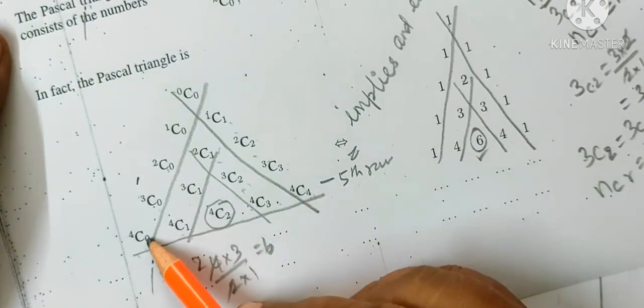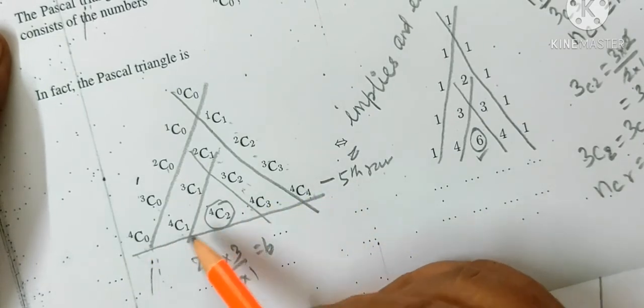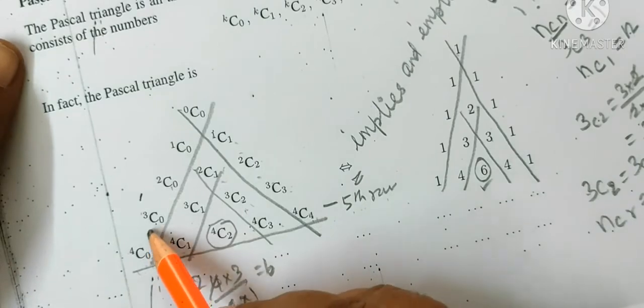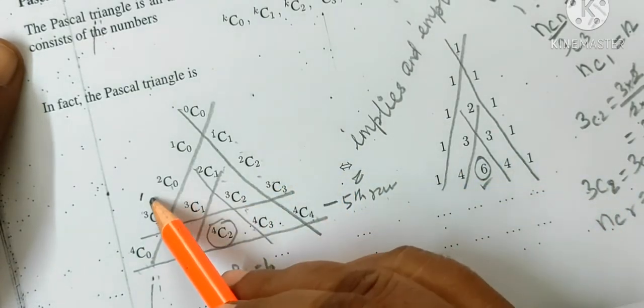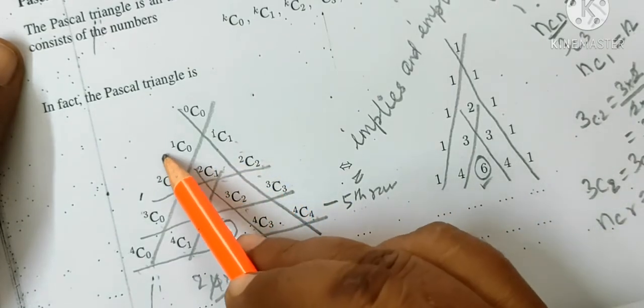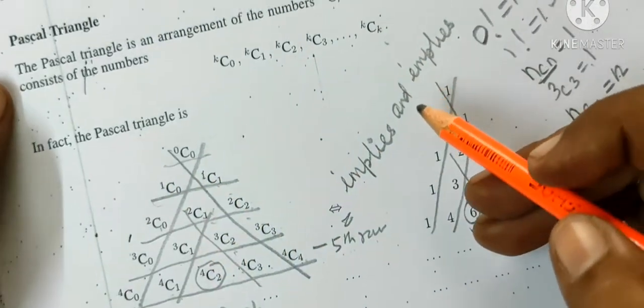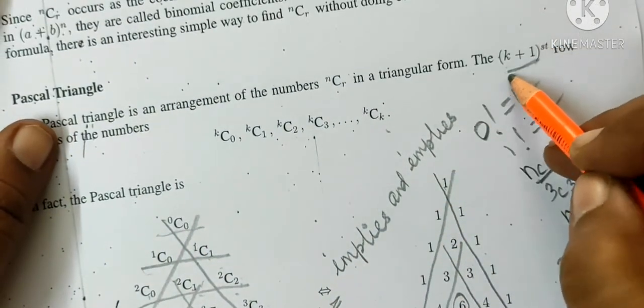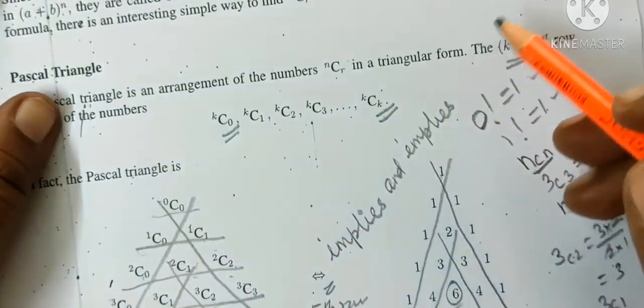Zero is included. Fourth row is three, third row is two, second row is one, first row is zero. Similarly, k plus one row is k, since it starts from zero.